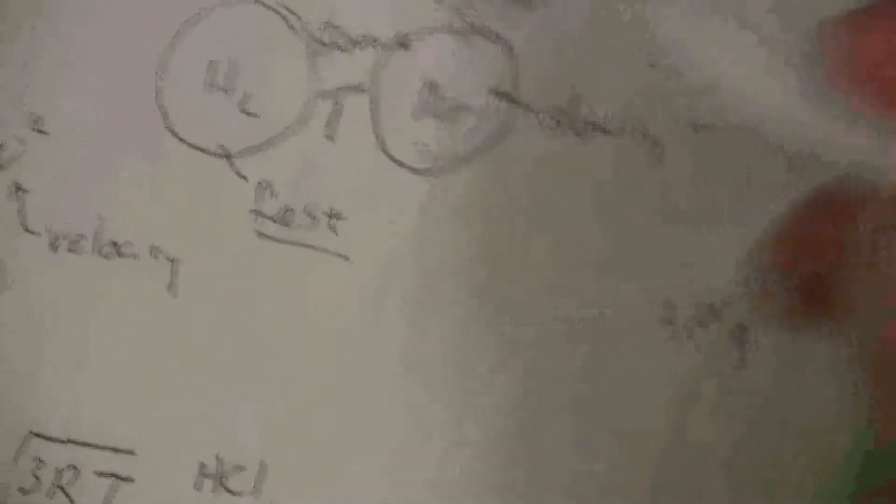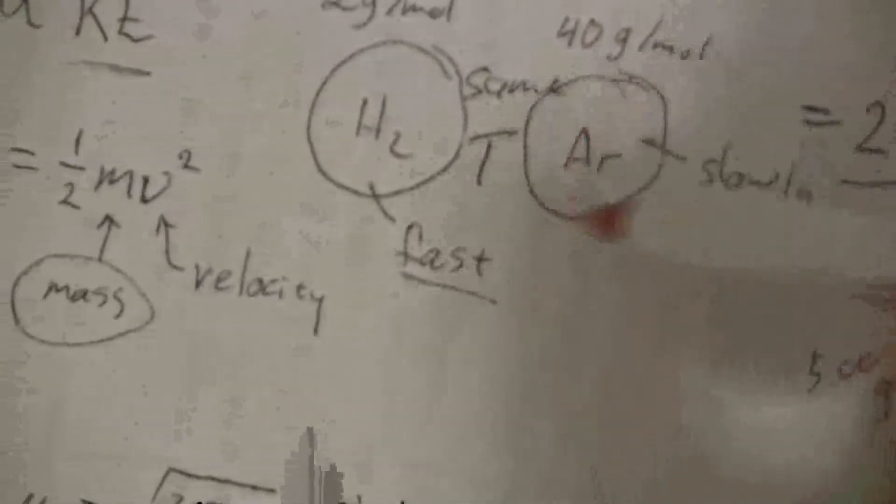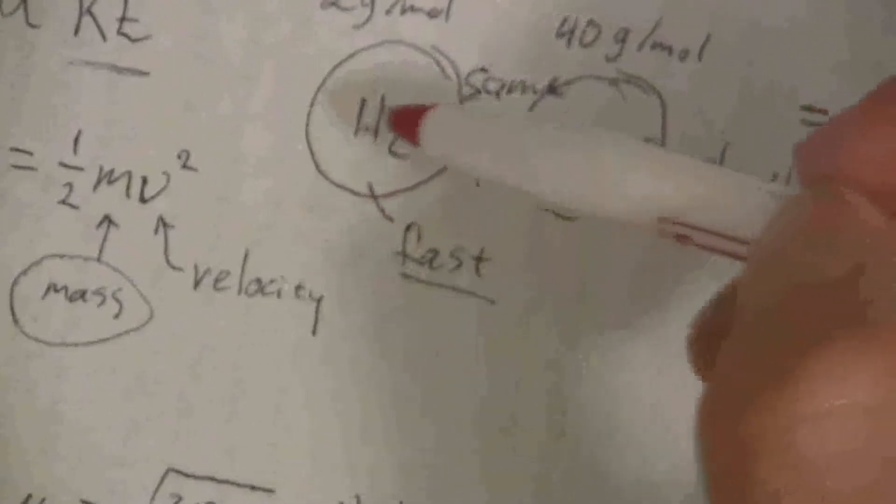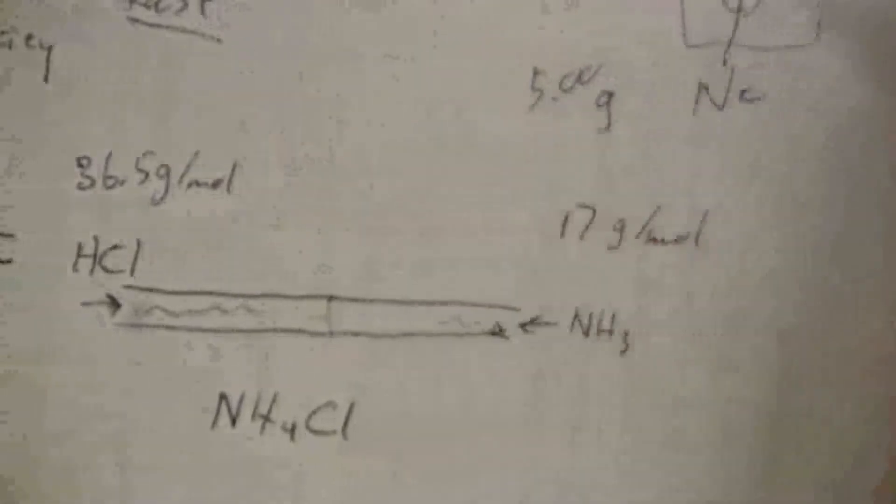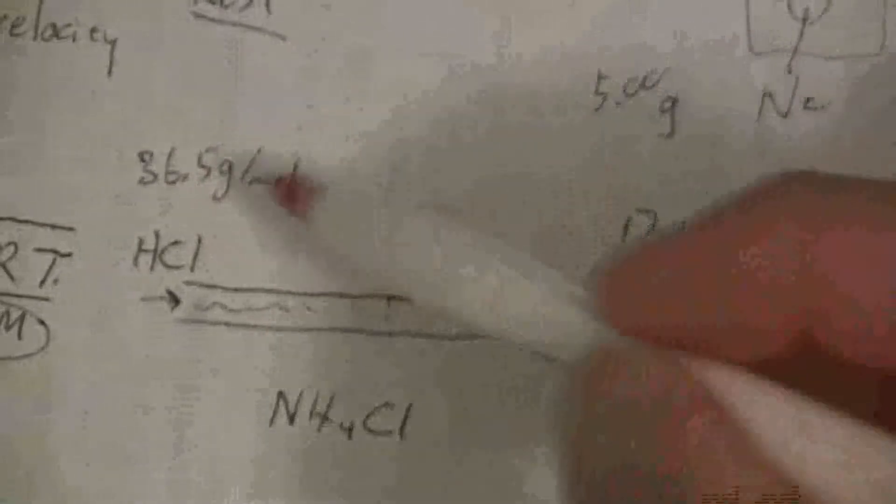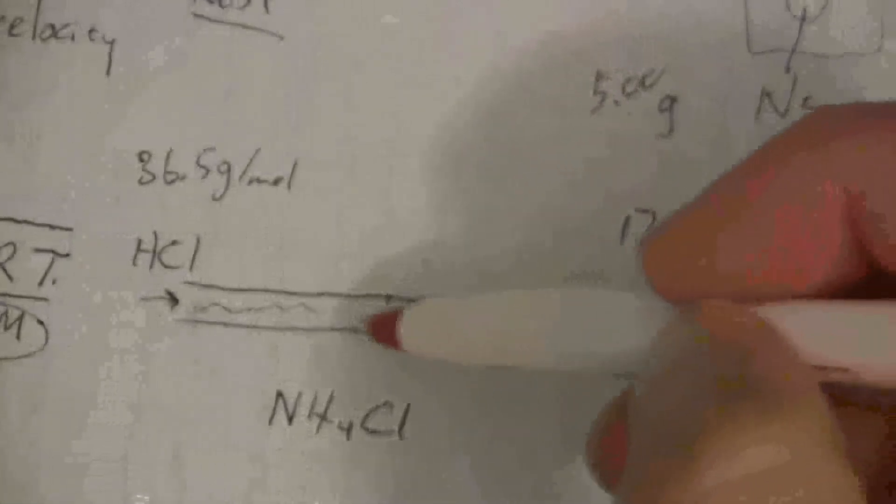And basically, the heavier the gas is, the slower it's going to go. Larger value in the denominator means it's going to reduce the average velocity. Just like we saw before, the heavier argon moves more slowly than the light weight hydrogen. So if you look at the molar mass of these gases, HCl, its molar mass is going to be about 36.5 grams per mole. And the molar mass of ammonia is, that would be 14 and 3, is about 17 grams per mole. So just about half the mass, which means that the ammonia is moving much more quickly than the HCl.